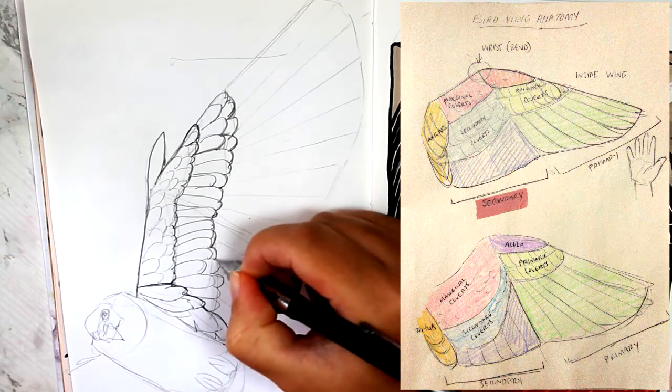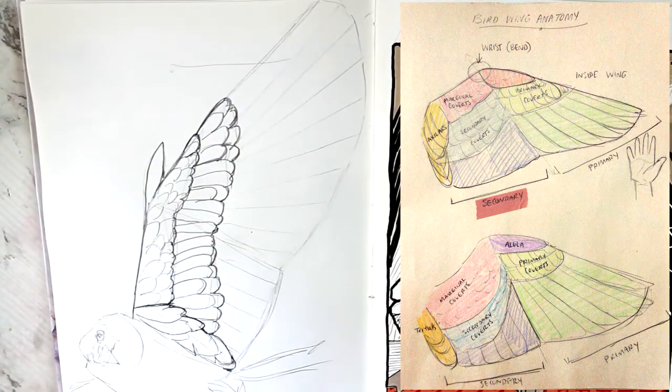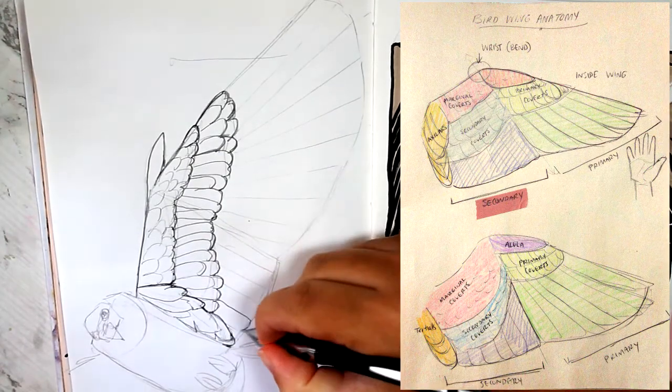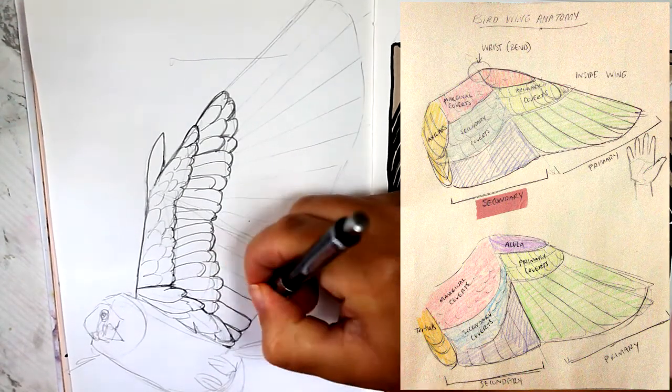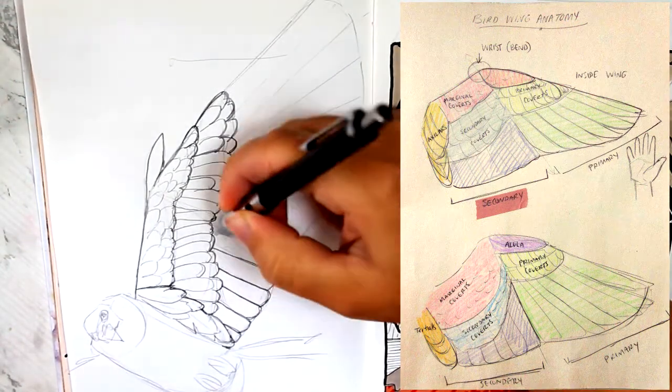All right, not bad. Okay. These main feathers here are often kind of squared at the edge and are often just one layer. So I'm just going to draw a nice little overlapping squared edge.